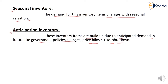Let us take an example. If the government announces that the next day the price of petrol will be higher, our organization stocks up on petrol due to the anticipated price hike. Another example: if the government announces that a certain item will be banned or restricted from sale the next day, our organization stocks that item. This stocked item is known as anticipation inventory due to government policy changes.